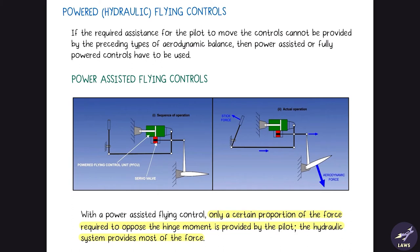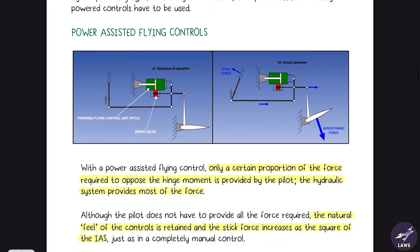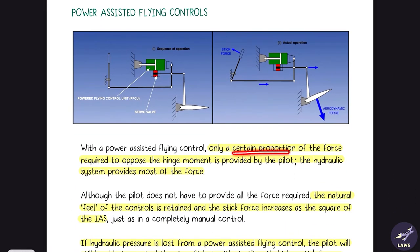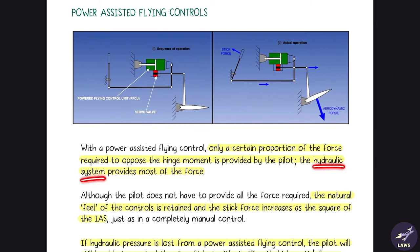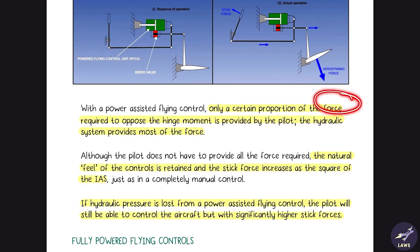Next we look at powered flying controls. With power assisted flying controls, only a certain proportion of the force required to oppose the hinge moment is provided by the pilot; the rest is provided by the hydraulic system. Because of this, the natural feel of the control is still retained, and stick force increases as the square of IAS.